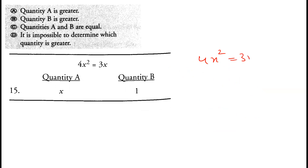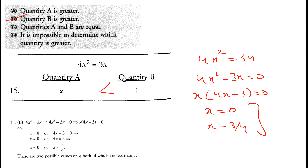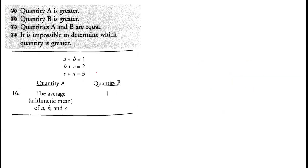Question 15: 4x squared equals 3x. Rearranging: 4x squared minus 3x equals 0. Taking x as common: x(4x minus 3) equals 0, so x equals 0 or x equals 3/4. Both values are less than 1, so quantity B is greater than quantity A. Option B is correct.